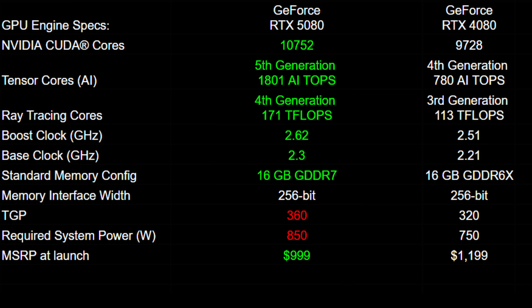Next up is the 5080 versus the 4080. We see an increase in CUDA core count — 10,752 versus 9,728 — as well as increases in tensor cores and ray tracing cores. Unlike the 5090, the 5080 actually sees an increase in both base clock and boost clock over the 4080.